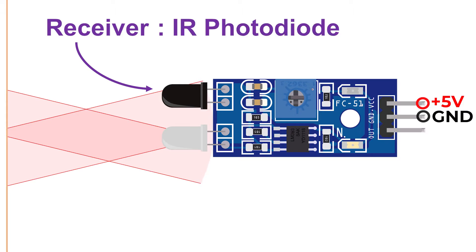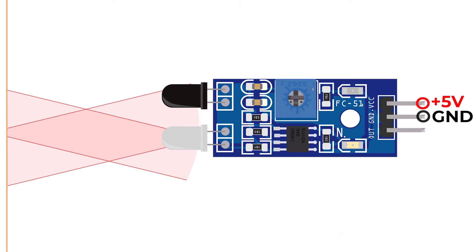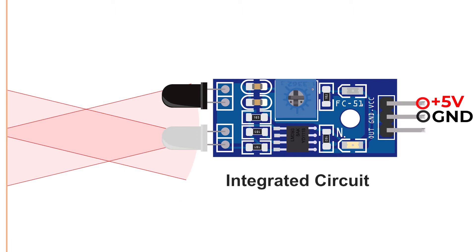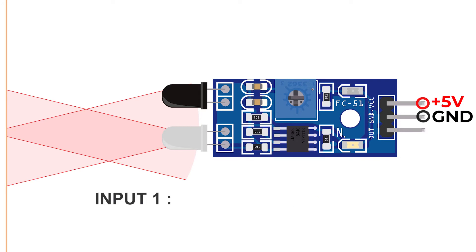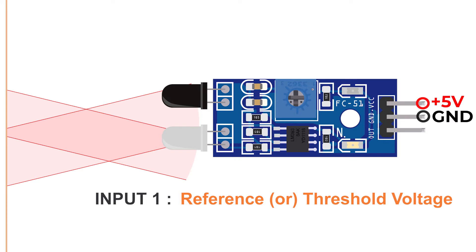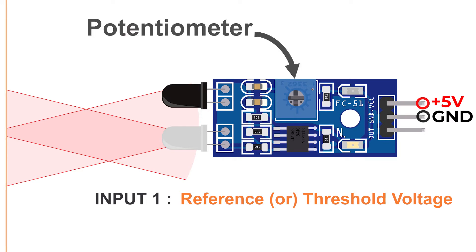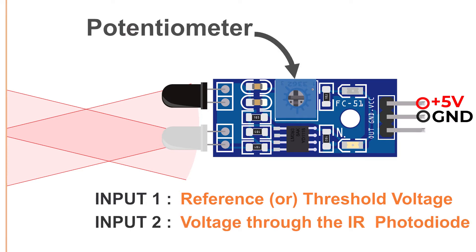The receiver picks up the light that got reflected back. This receiver is an infrared photodiode that changes its conductivity in reverse bias based on the amount of infrared light that falls on it. More the reflected infrared light, higher the voltage to the photodiode. The op-amp, which is short for operational amplifier, is an integrated circuit designed for amplifying and outputting the voltage difference between the two input pins. One of its inputs is a reference or threshold voltage set by the potentiometer and the other input is the voltage to the photodiode.